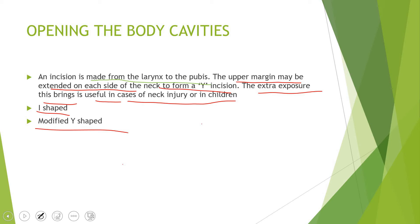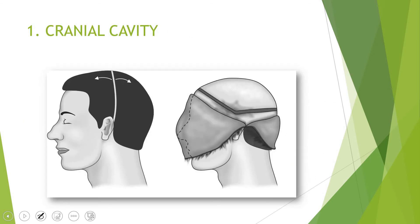The sequence we follow is head to toe. First we open the cranial cavity, then the thoracic cavity, then the abdominal cavity. To open the cranial cavity, the incision used is called the intermastoid incision — between the two mastoid processes, behind the ear. You take the incision from one mastoid up to the vertex of the skull and back down to the other mastoid. This causes the scalp to become loose so it can be flapped forward and backward, fully exposing the cranium.